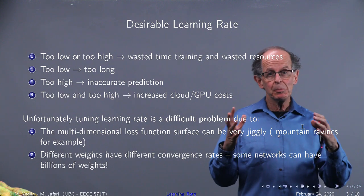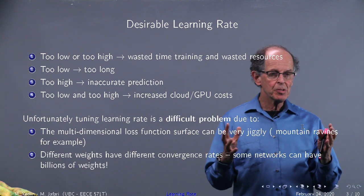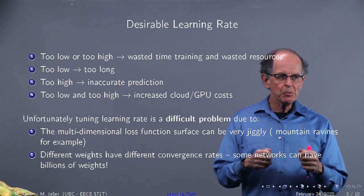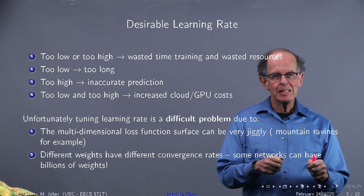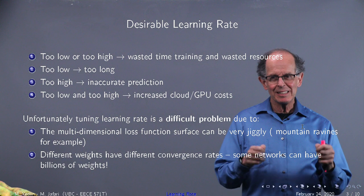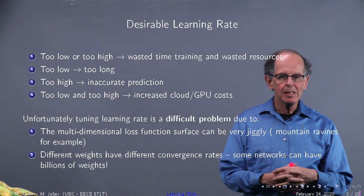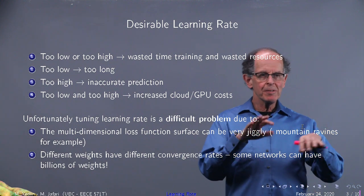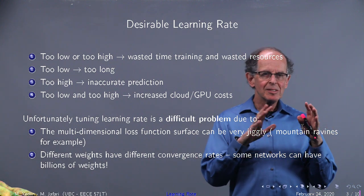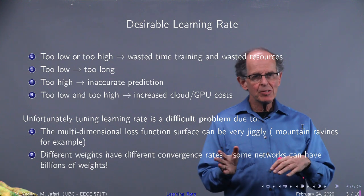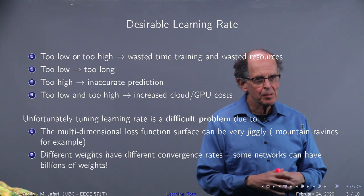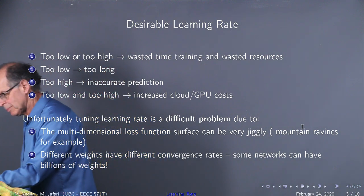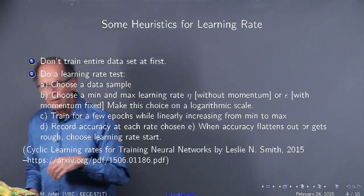And you're in an n-dimensional space — remember, n could be in the billions, so you can't even see it. Different weights have different rates; don't forget that. That's a big mess. It means some parts of the valleys and mountains of the loss function will be differentially sensitive to the weightings we pick.